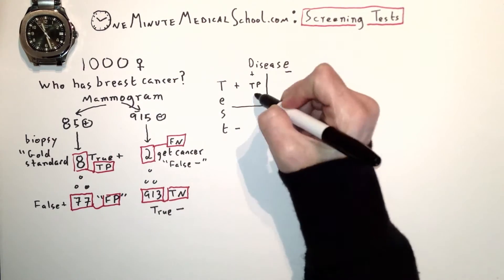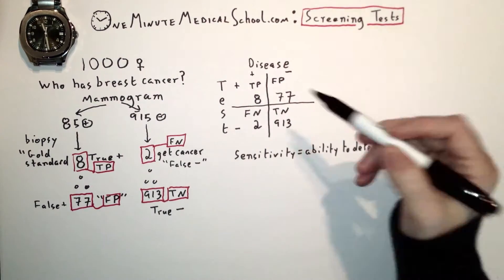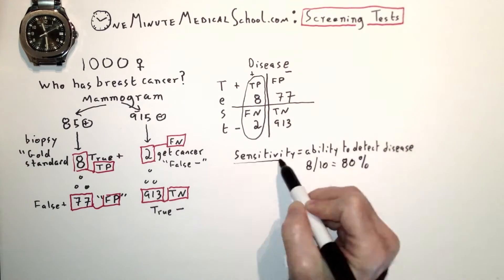Let's plot those on a table of test versus disease. First important thing is sensitivity, which is the ability to detect disease. That's 8 out of 10 or 80 percent.